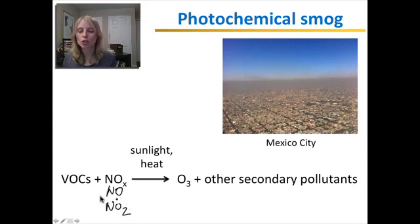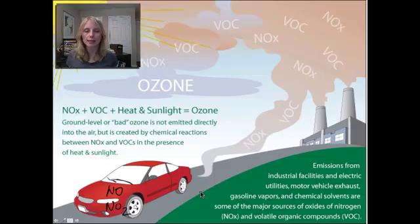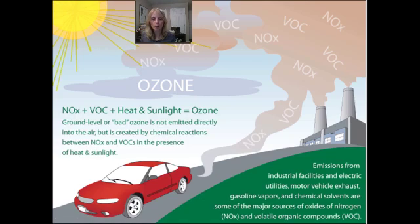Various nitrogen oxides react with VOCs in the presence of sunlight and heat to form tropospheric ozone and other secondary pollutants. Ozone and these other pollutants together are photochemical smog. You can see nitrogen oxides coming from car exhaust and factories reacting in the presence of sunlight to form ozone and other secondary pollutants. Car exhaust is the biggest source of these VOCs and nitrogen oxides.